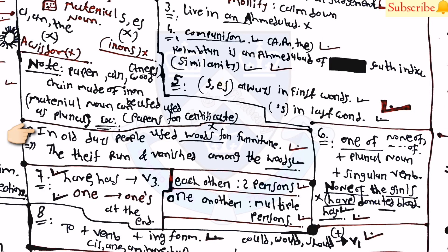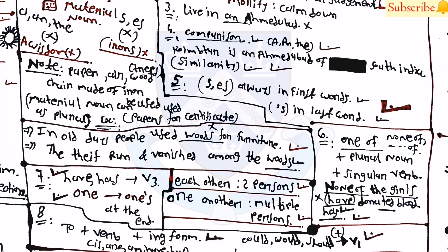Using 'papers' for certificates is right. But 'In old days people used woods for furniture' is wrong, because wood here is a material noun. However, 'The thief ran and vanished among the woods' is right, because here 'woods' refers to trees/forest, not the material. For place names, you cannot use articles — 'living in Ahmedabad' cannot take an article. However, when making a comparison, you can use an article: 'Coimbatore is an Ahmedabad of South India' is correct.